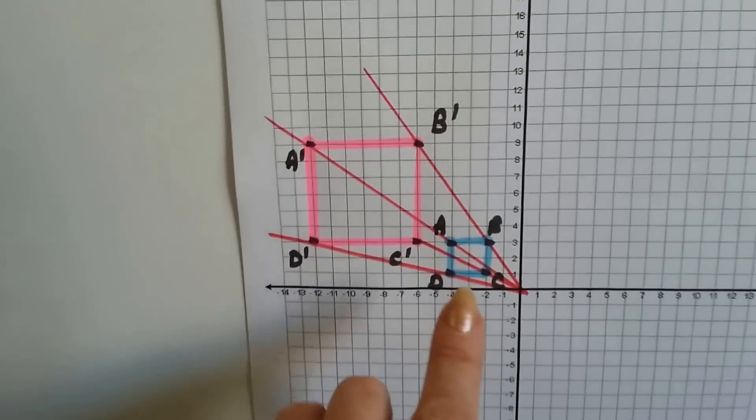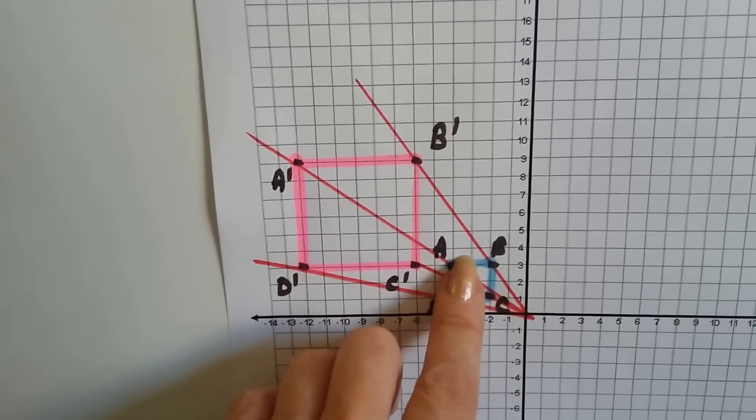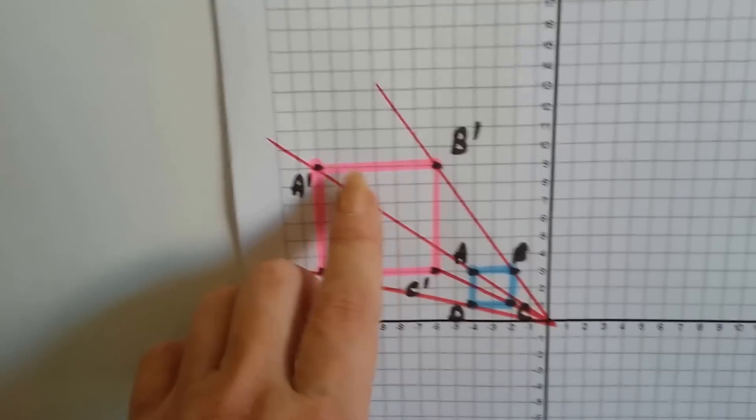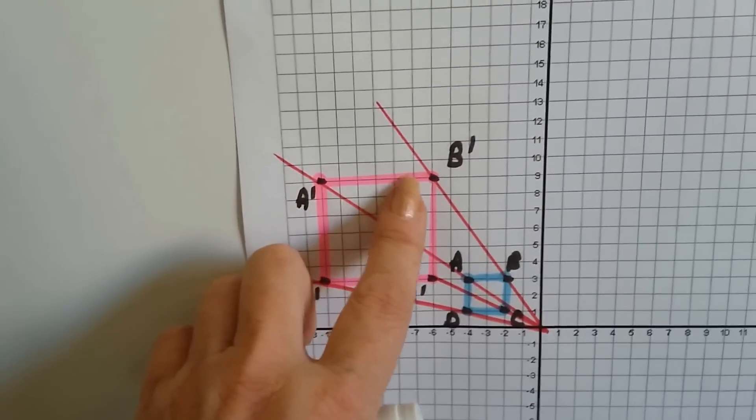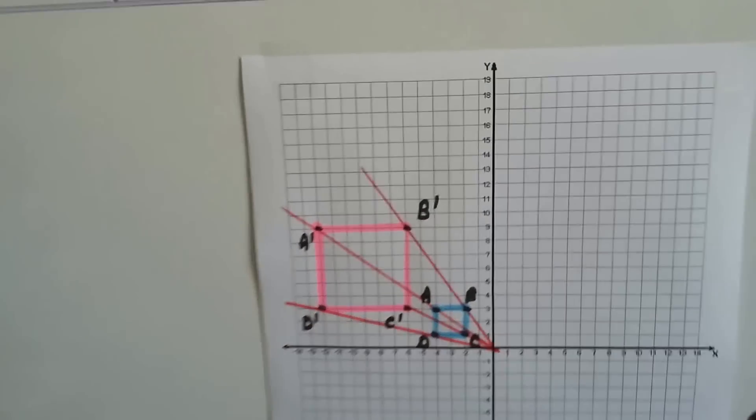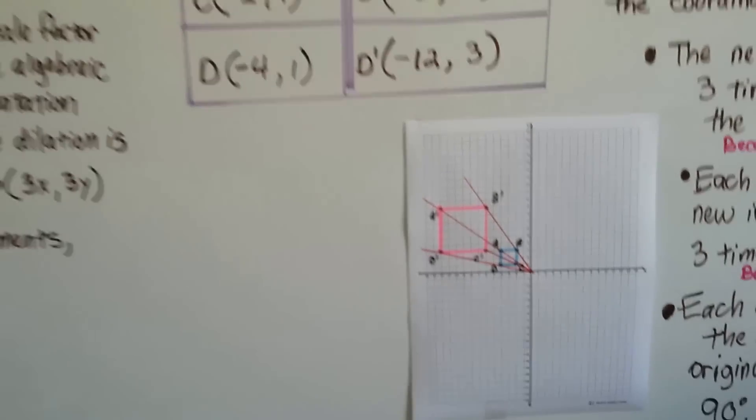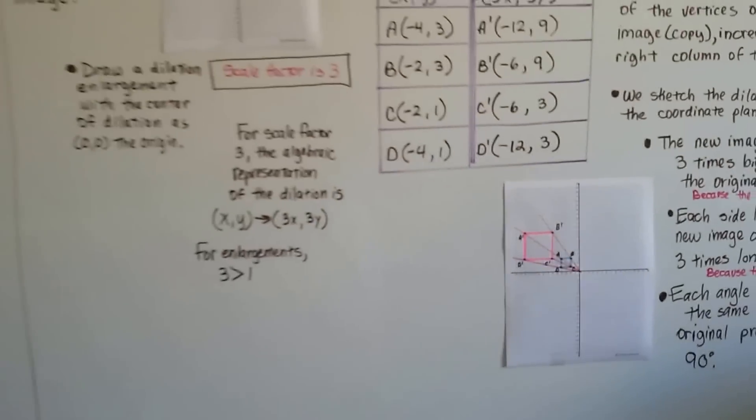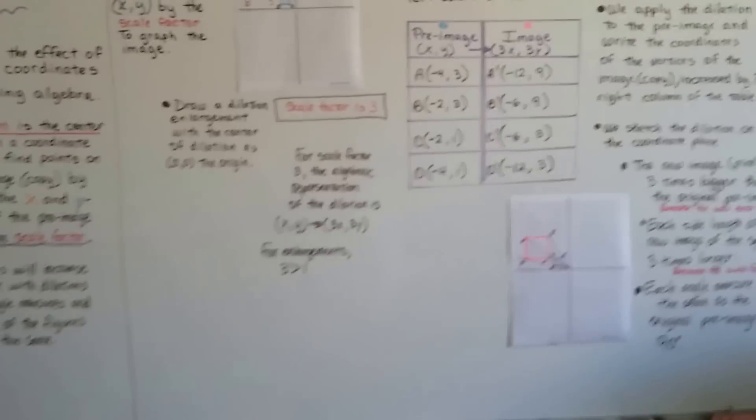Three times larger. This side is 2 for line AB, and this side is 1, 2, 3, 4, 5, 6. That's 3 times bigger. 2 times 3 is 6. So there we've graphed an enlargement. That wasn't too bad, was it?